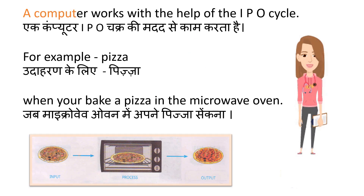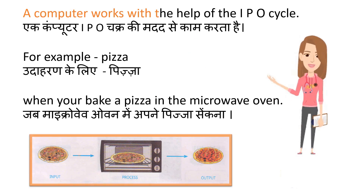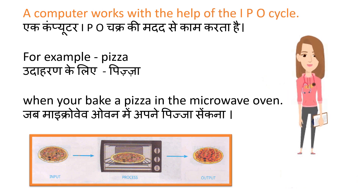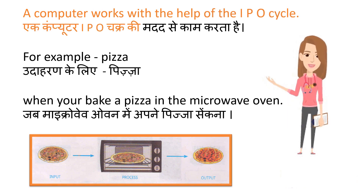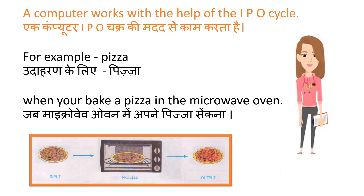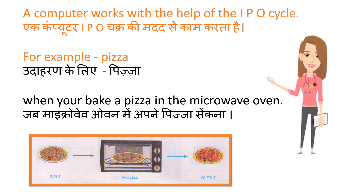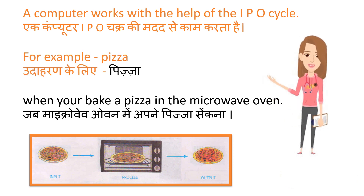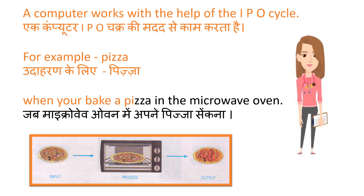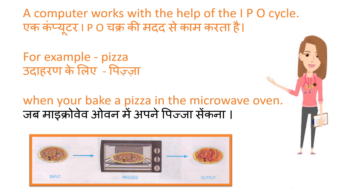A computer works with the help of the IPO cycle. Computer IPO chakra ki madad se kaam karta hai. For example, pizza — when you bake a pizza in the microwave oven, it demonstrates the input, processing, and output cycle.